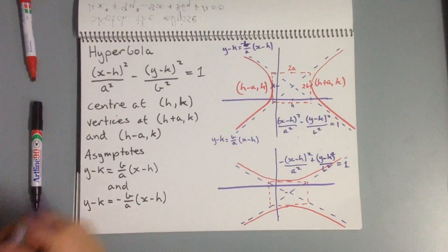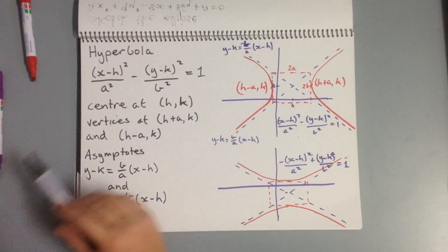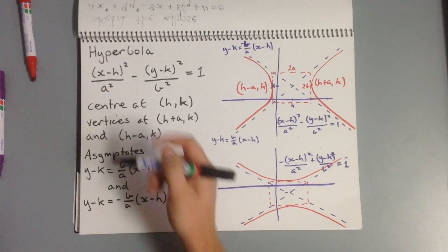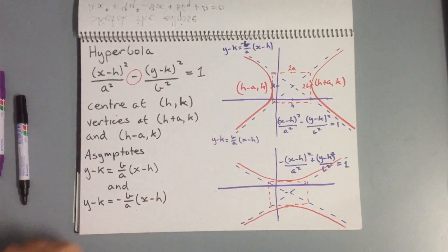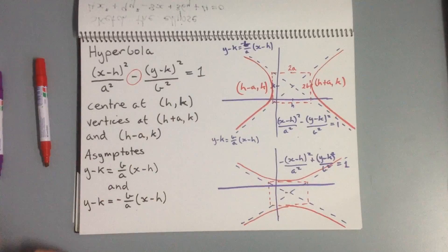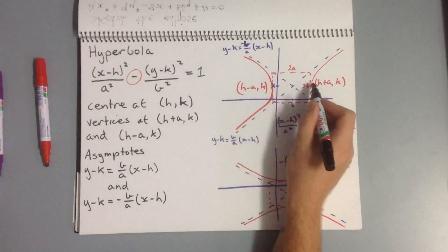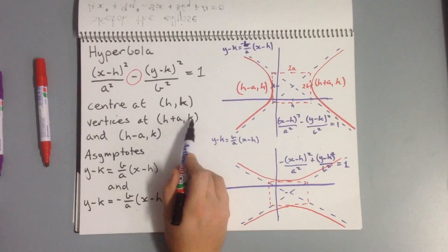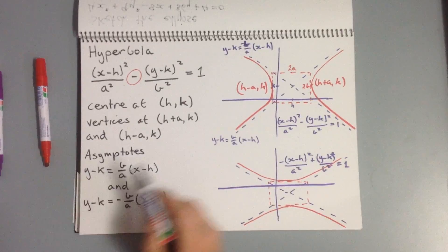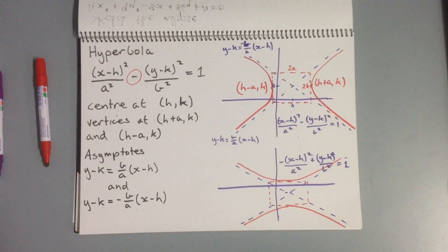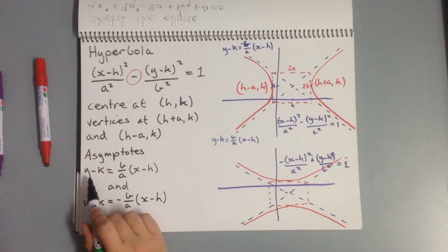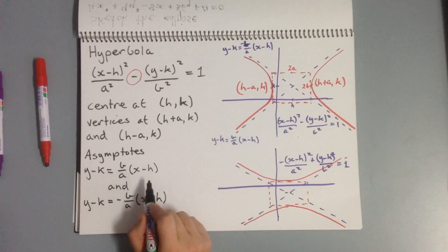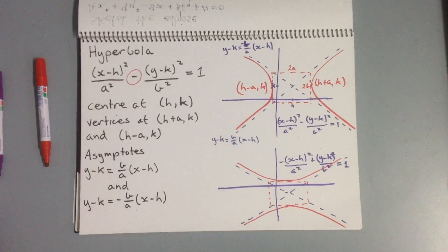We'll move on to our hyperbolas. A hyperbola is basically the same as our ellipse, but the only difference is that instead of an addition sign between the two terms, it's a subtraction sign — we're actually taking away the second term. So again our center is at (h, k). We have what we call vertices, which are the centers of our curve parts, given by (h plus a, k) and (h minus a, k). We also get two asymptotes, given by y minus k equals b over a times (x minus h) and y minus k equals negative b over a times (x minus h). There is a quicker way to work out our asymptotes, which I'll show you in a moment.